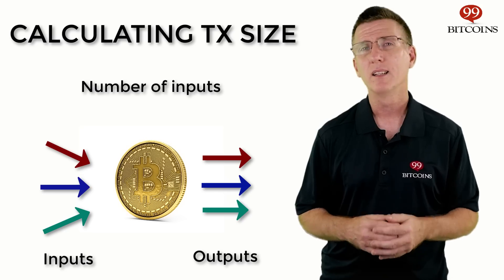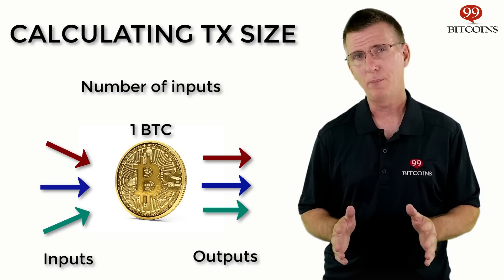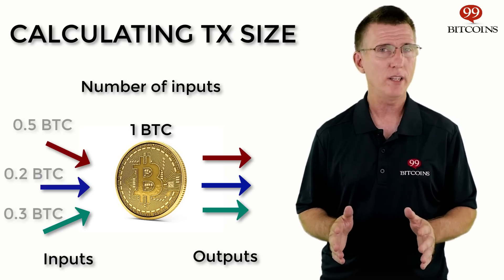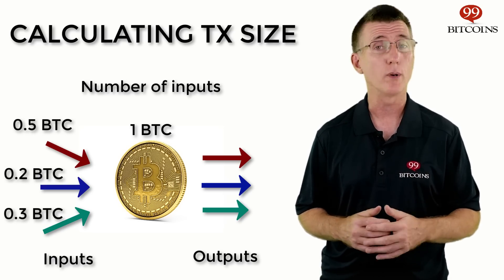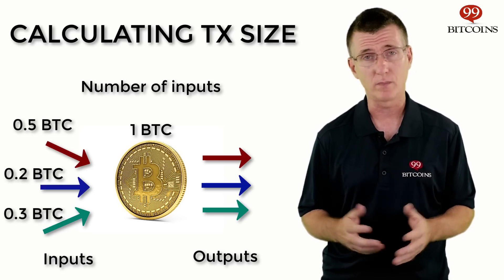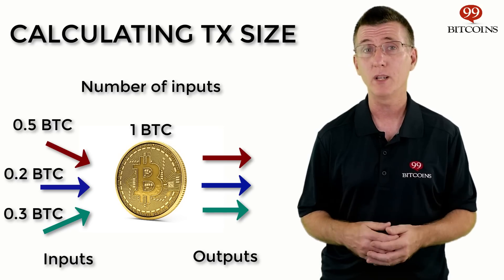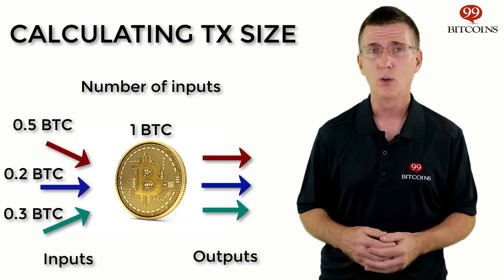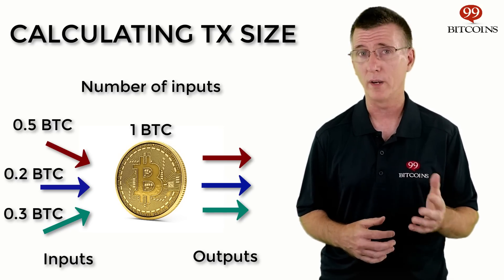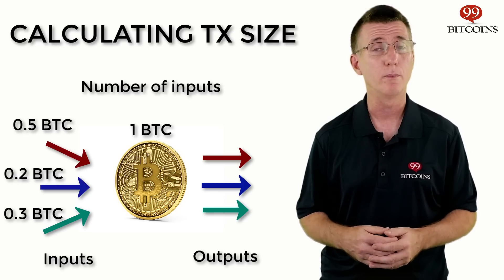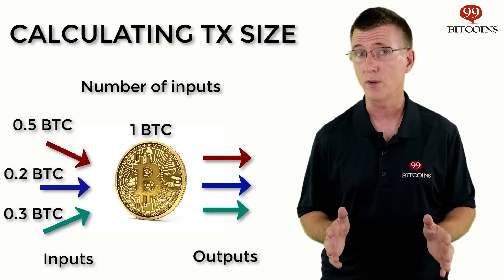For example, let's say you own one bitcoin. That bitcoin is actually comprised of many references to transactions sent to you in the past, assuming you accumulated that one bitcoin from several sources. When you send this one bitcoin to someone else, your transaction will be composed of all of these previous references.